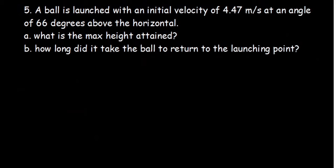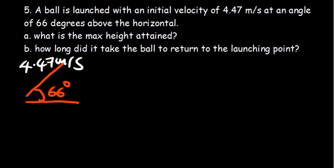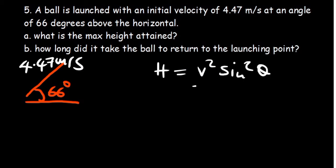Question 5: a ball is launched with an initial velocity of 4.47 m/s at 66 degrees above the horizontal. Find the maximum height attained. The formula for maximum height is H = V² sine²theta / (2G).